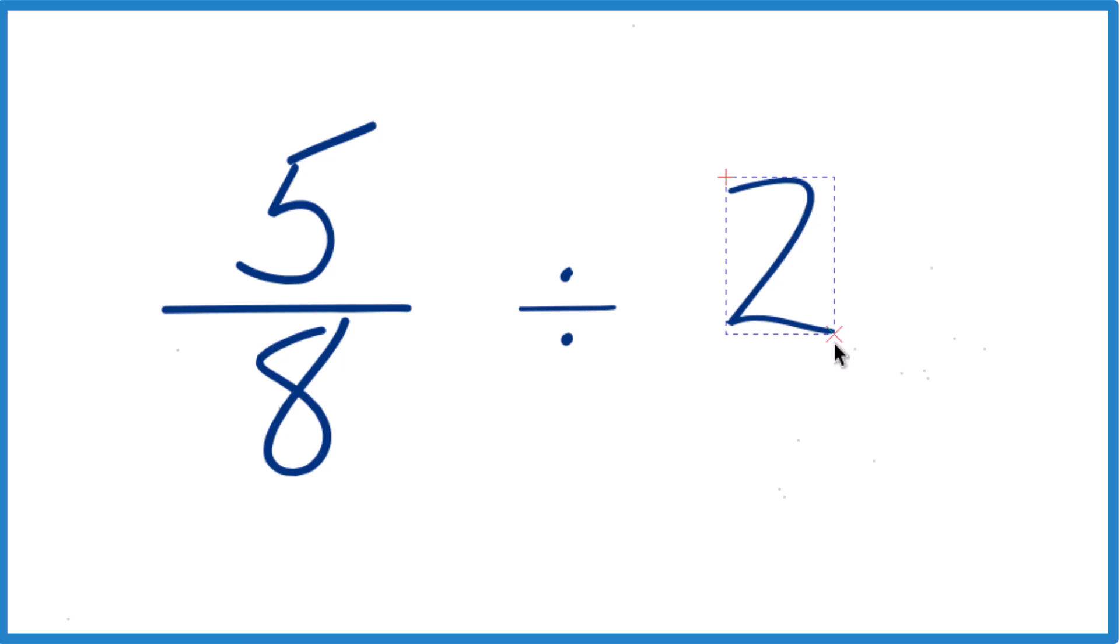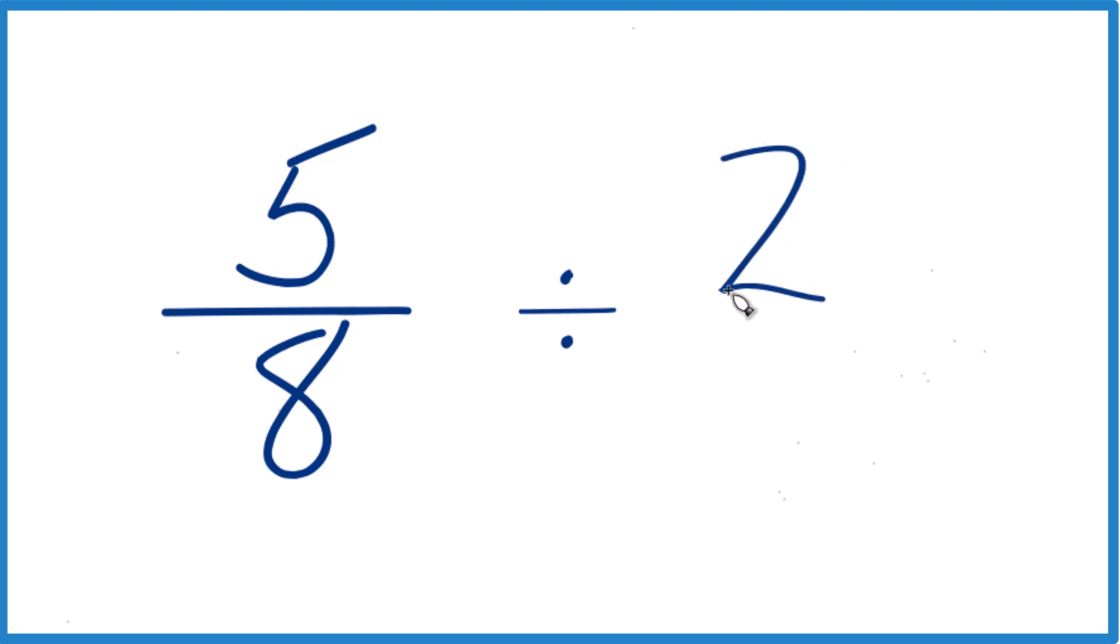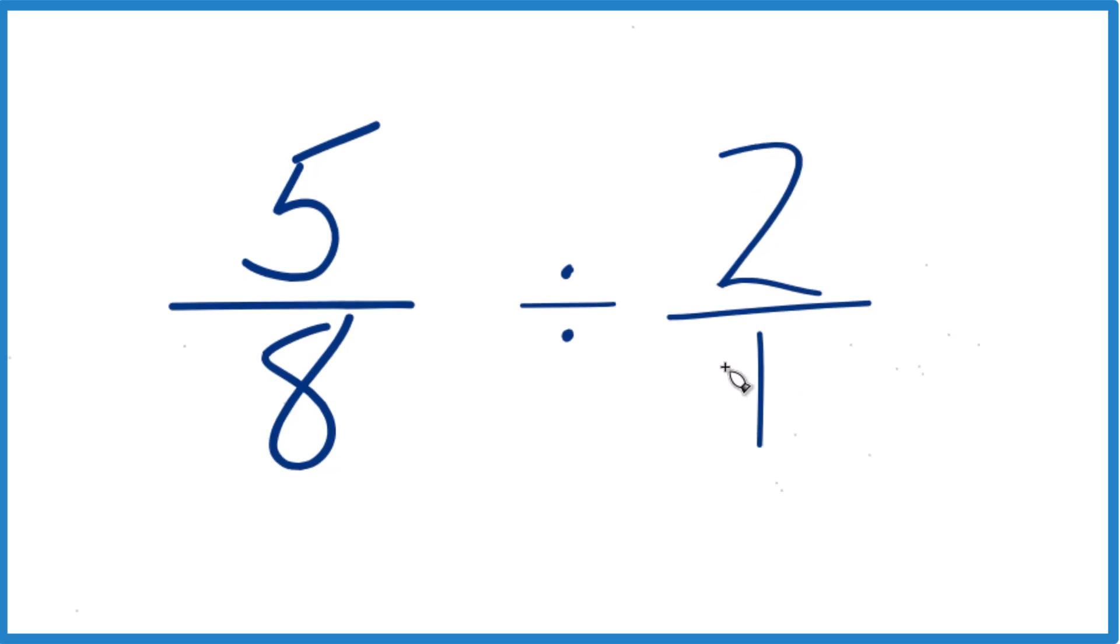Let's take the 2 here, and instead of 2, let's call it 2 over 1. It's still 2. We're dividing by 1, but now things line up pretty nice.